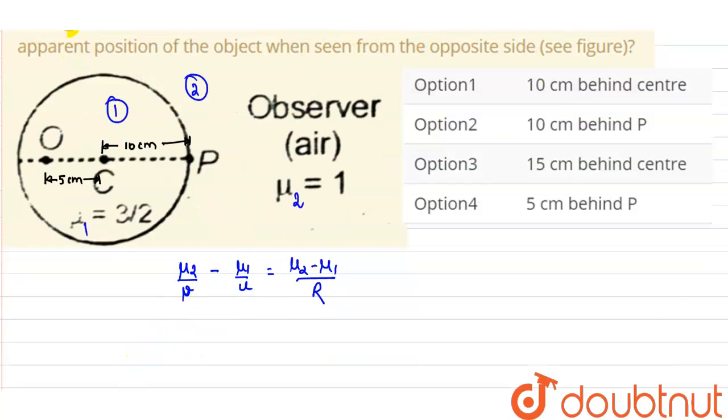So from here, substituting the respective values, μ₂ is 1 upon the image distance V minus μ₁ is 3/2, that is 1.5, divided by U will be...